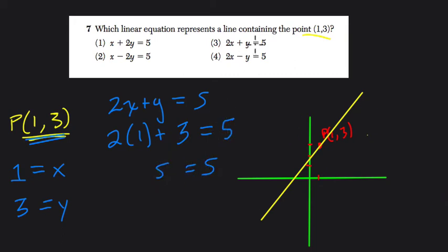So this time, the answer happens to be 3. You can go around and test all of them, but let me show you one counterexample. In choice 4, it says 2x minus y equals 5. If I plug x in, it's 2 times 1 minus 3.